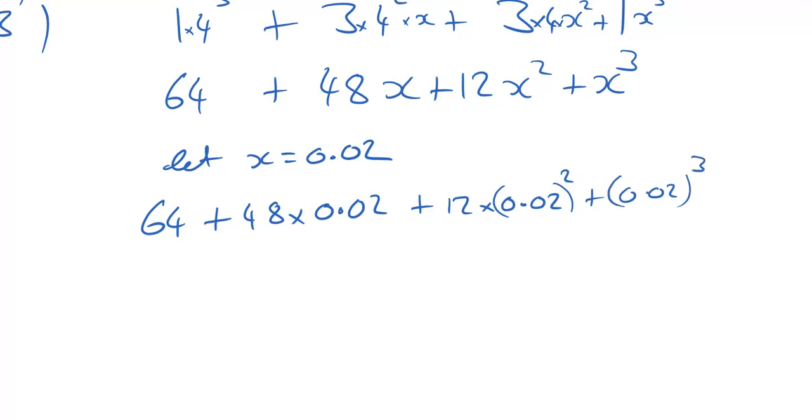Now we should be able to do this without any troubles, without a calculator. 48 times 0.02, well, that is going to be just 0.96. 0.02 squared, well, it's going to have a 4 in it, isn't it, because 2 squared is 4. And we're going to move backwards a little bit on the decimal place, so it's going to be 0.0004 times 12 will be 0.0048.